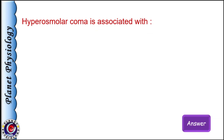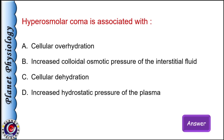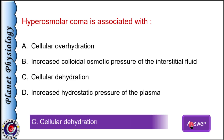Hyperosmolar coma is associated with: a) cellular overhydration, b) increased colloidal osmotic pressure of interstitial fluid, c) cellular dehydration, and d) increased hydrostatic pressure of plasma. The correct answer is cellular dehydration. Hyperosmolar means increased osmolarity of extracellular fluid, causing exosmosis, leading to cellular dehydration of neurons, which results in coma.